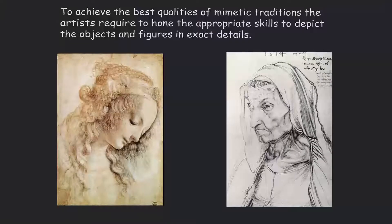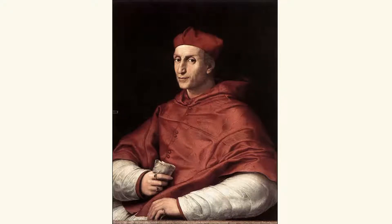To achieve the best qualities of mimetic tradition the artist requires honing appropriate skills to depict objects and figures in exact detail. You almost feel like you can go and touch the robe, the drapery, the cloth, the skin — and you expect a tactile feeling — but that is absolutely wrong because it is a canvas painting, just oil paint. Using canvas as a surface and oil paint as a medium, and using certain techniques of painting, you create a very convincing realism which forms a very important part of mimetic art.